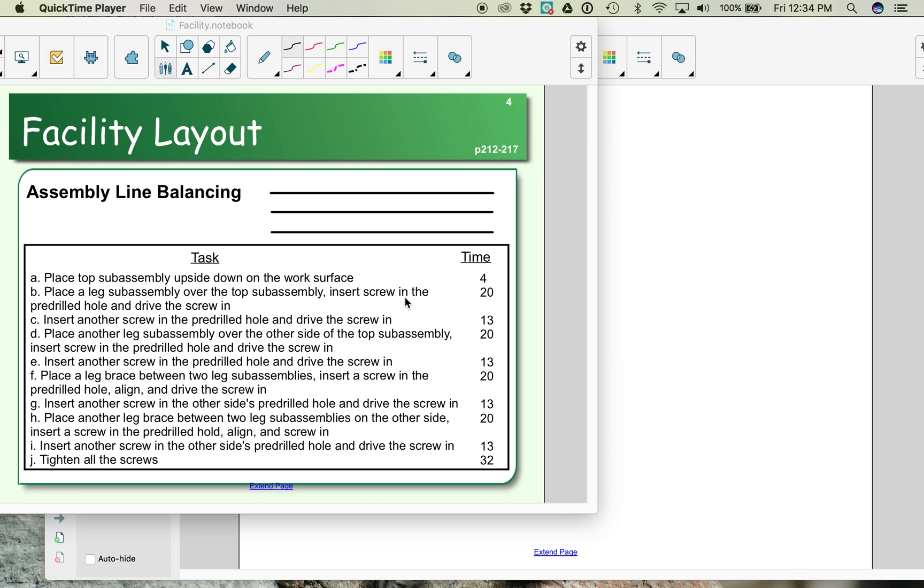When you have a product layout, your facility is laid out similar to your process flow diagram. That is, each workstation or location within your facility is laid out so that it follows the order in which your materials are turned into your finished product. So the steps that you follow in your process flow diagram become the order that your facility is laid out in.